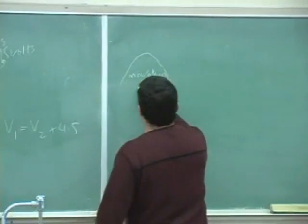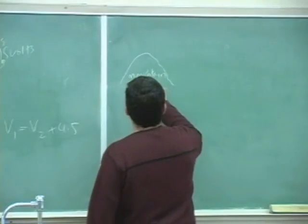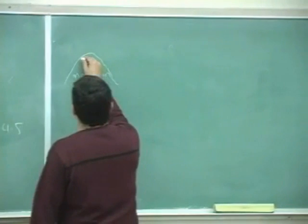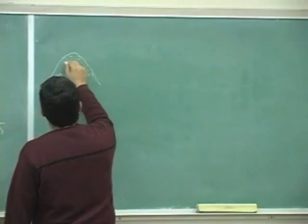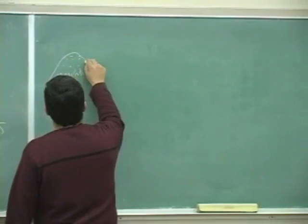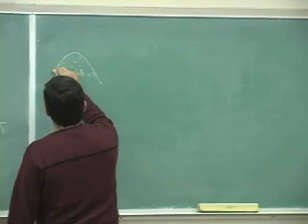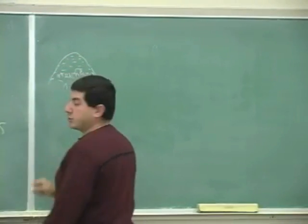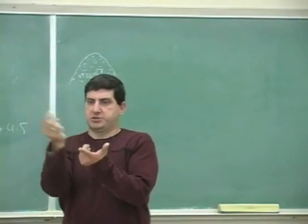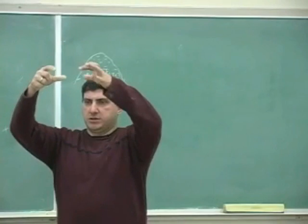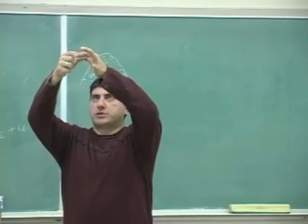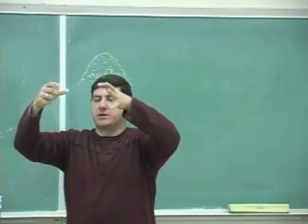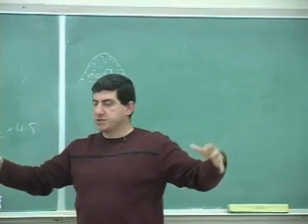So if you have a positive charge, it's like the gravitational equivalent of a mountain. The height around it decreases as you go away from it. So if I draw equal potential heights — little circles — if I go closer to it, the height increases, and if I go farther away from it, the height decreases.